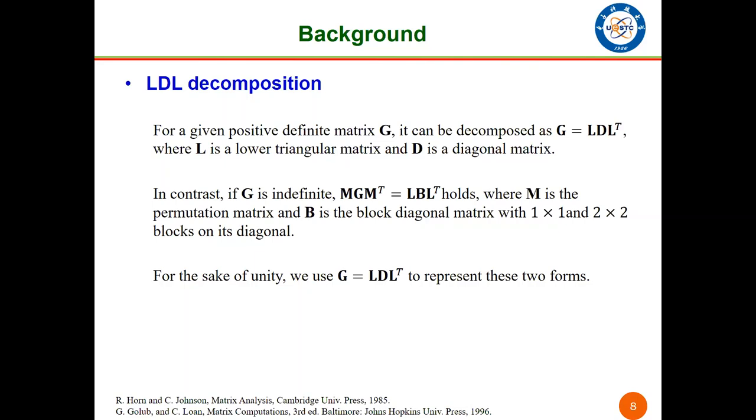And L here is a lower triangular matrix and D is a diagonal matrix. In contrast, if G is indefinite, this equation always holds, where M is a permutation matrix and B is a block diagonal matrix with 1 by 1 and 2 by 2 blocks on each diagonal. For the sake of unity, we still use G equals LDL^T to represent these two forms.